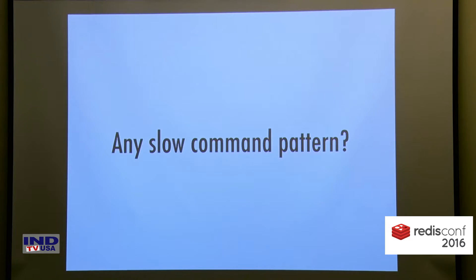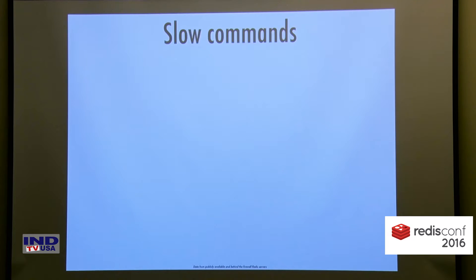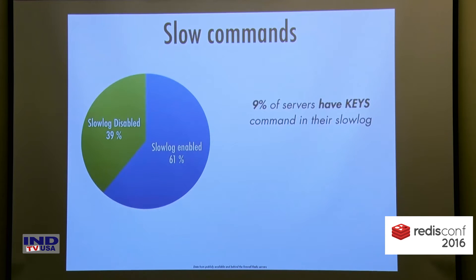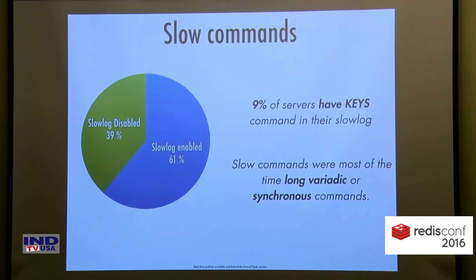You may wonder: in this big dataset, did we find any slow command patterns? The easiest way to gather slow commands on a production-ready server is to leverage the slow log. But the slow log must be activated — only two-thirds of the servers in our dataset had the slow log enabled. Surprisingly, we also discovered that 9% of servers had the famous KEYS command in their slow log. Other slow commands were most of the time long variadic and synchronous commands.